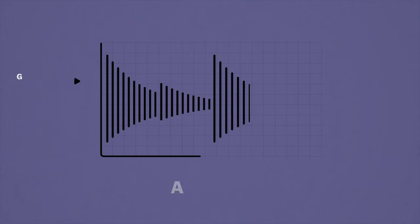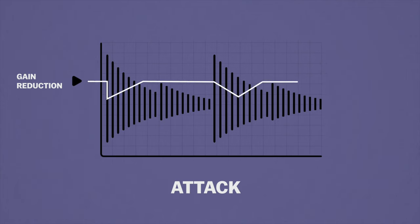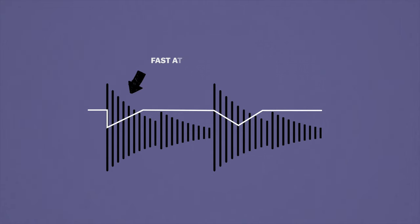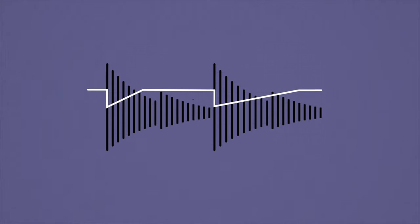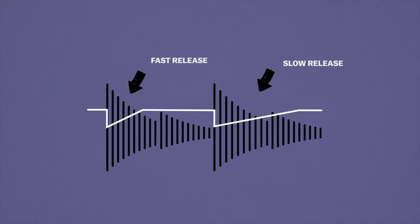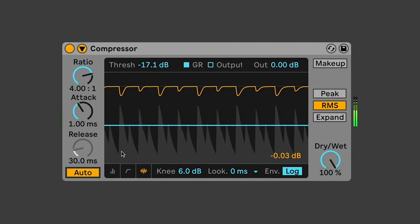Attack time is how quickly the compressor activates after the signal passes the threshold. The quicker the attack time, the quicker it will begin compression. A quick attack time can be really useful if you want to control sounds with large transients like drum hits, whereas you may want a slower attack time if you want to let some of those transients through. Release time is how quickly the level returns to zero compression once it drops below the threshold. The longer the release time, the longer it takes for the volume to return to its pre-compressed level. Some compressors have an auto-release button which changes the release time depending on the type of transient — the more extreme the transient, the quicker the release, and vice versa.